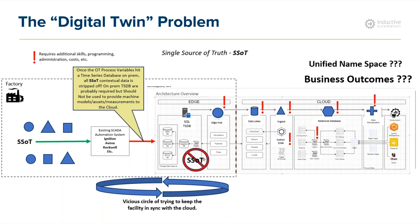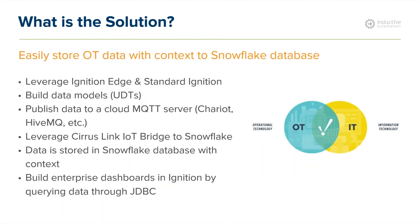We have to approach it differently, and that's the solution we want to share today. The solution leverages Ignition and SeriousLink to move data into a Snowflake database that allows you to store OT data with context — all delivered at the edge as a single source of truth. It leverages Ignition or Ignition Edge to connect to all devices, build data models or UDTs providing asset information and metadata, and publish that data to a cloud MQTT server using MQTT transmission and the Sparkplug specification. Then we use a SeriousLink IoT bridge for Snowflake to move that contextualized data to Snowflake automatically, with tables and structures already built out automatically.